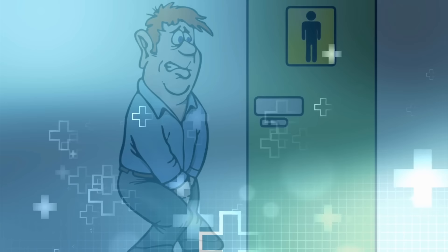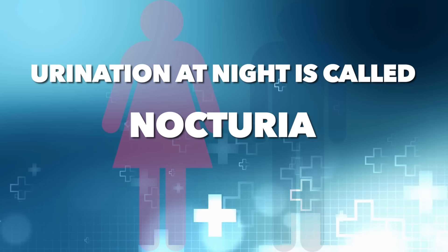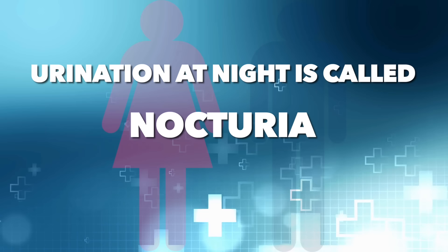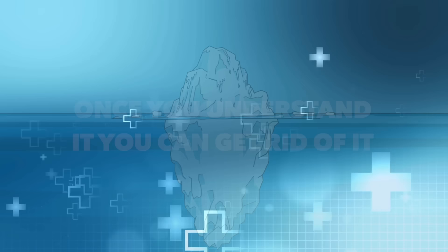Now urination at night is called nocturia and it happens equally in men and women. And urinary frequency is not a problem with the bladder. That's the tip of the iceberg. That is a symptom. There's something else going on. And when you understand it, you can get rid of it. And it's not going to be taking any pills. It's just a shift in what you eat.